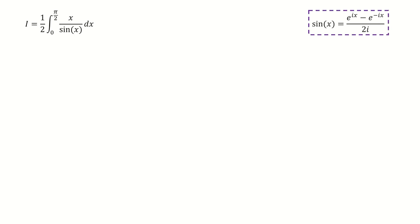So first, we write the sin x into this form, and then we plug in to replace it. The number 2 cancels out, and then we take the factor i out of the integral.